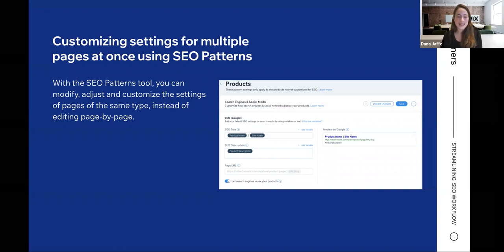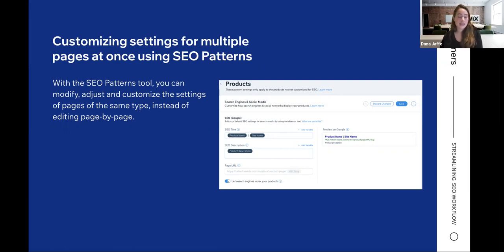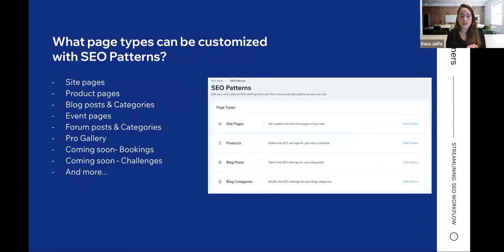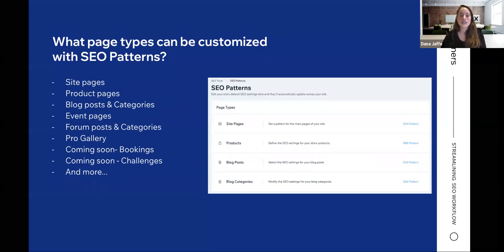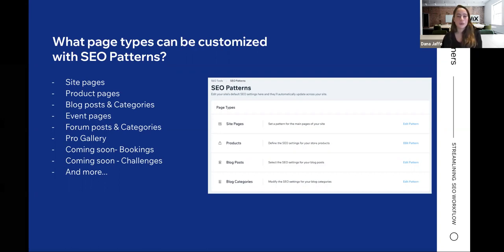Variables let you create a template for all of your product pages, and it will change according to the specific product being viewed. Before we look at the tool, remember that when you work with SEO patterns, it affects all pages that you haven't already customized SEO settings for — so it's a powerful feature that needs to be used wisely. There are many page types you can use SEO patterns for: stores, events, forum, blog, pro gallery expand mode, and very soon we're also launching challenges and bookings.